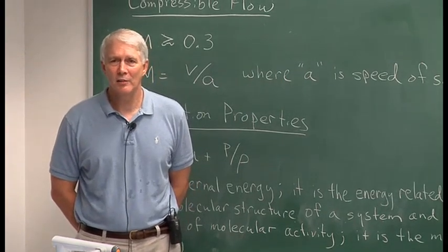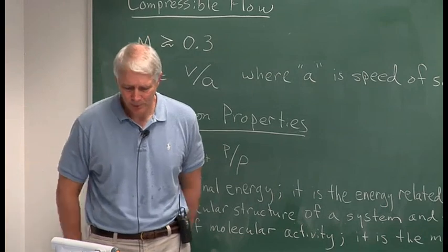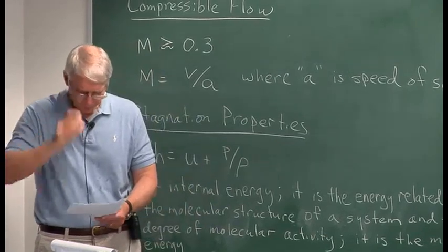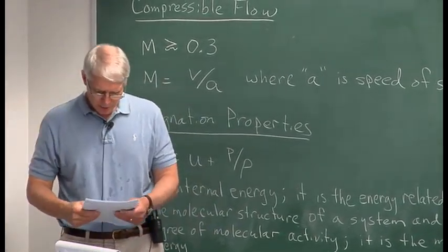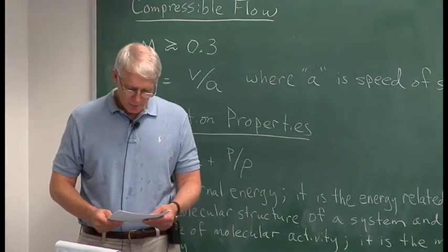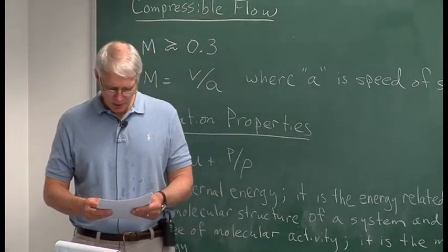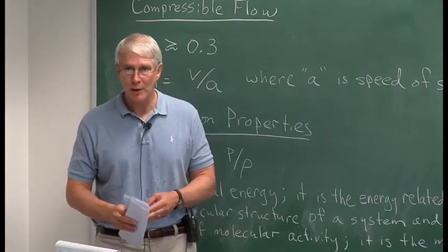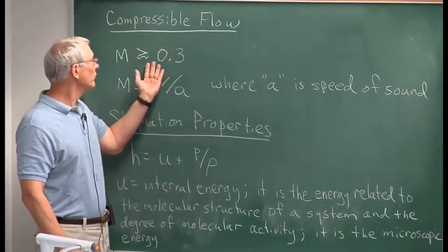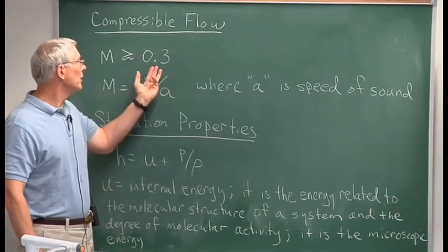Good morning. This is our first lecture in a series of lectures on compressible flow, and I'm going to do some review here. For the most part, we've been discussing flows in which the density has been held constant. For many flows, we can't make that assumption, and this arises for high speed flows of gas where the Mach number is greater than about 0.3. It's not exactly 0.3, but this is the generally accepted range when we go into the compressible flow range. You don't know what a Mach number is yet.